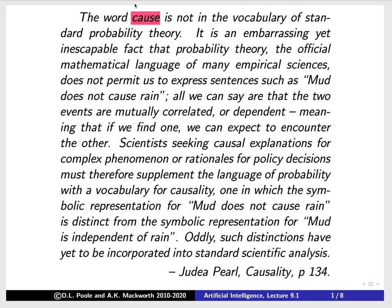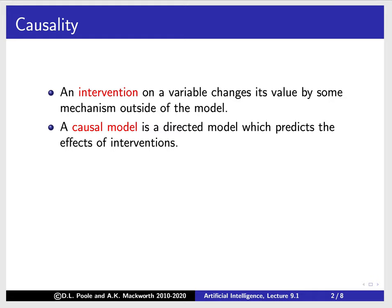That's what we're going to talk about now — how to model causality. We're going to define something called an intervention on a variable: changing its value by some mechanism outside of the model. For example, I'm going to cause the switch to be up, I'm going to cause something else to be true. So a causal model is a directed model which predicts the effect of intervention — a model that predicts what happens when we do things, when we act in the world.